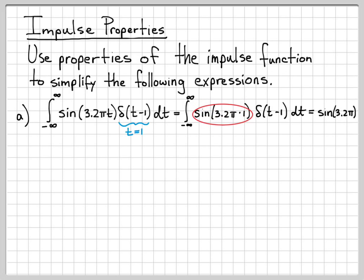So I end up with sine of 3.2π times 1, which is just a constant. I can bring this outside, and I'm left with the integral from minus infinity to infinity of this impulse function.